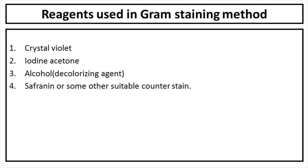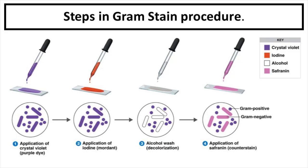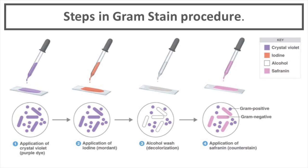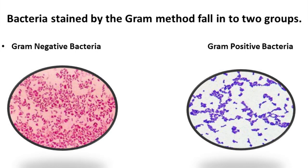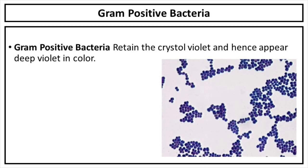Crystal violet, iodine, acetone alcohol as a decolorizing agent, and finally safranin or some other suitable counter stain. Bacteria stained by the Gram method fall into two groups: Gram negative bacteria and Gram positive bacteria. Gram positive bacteria retain the crystal violet and appear deep violet in color. Gram negative bacteria are stained pink.